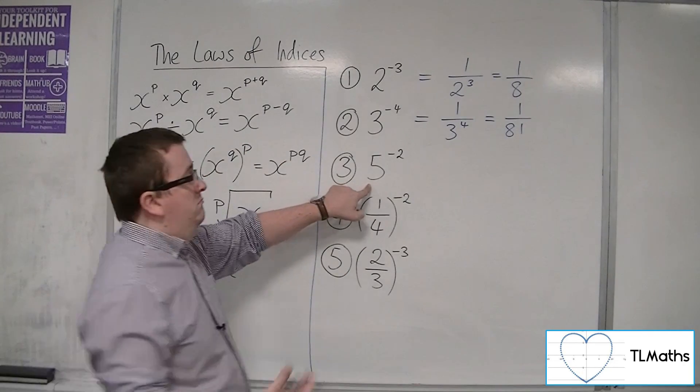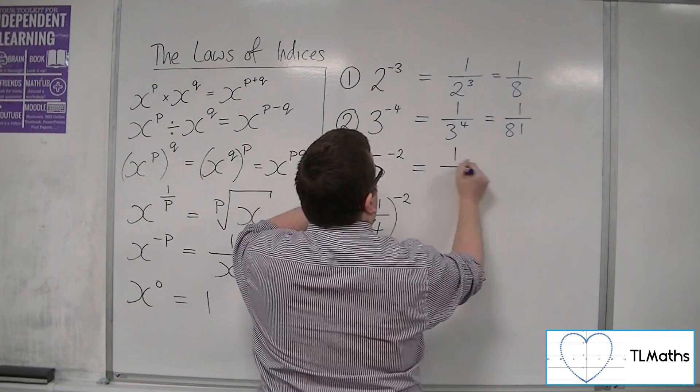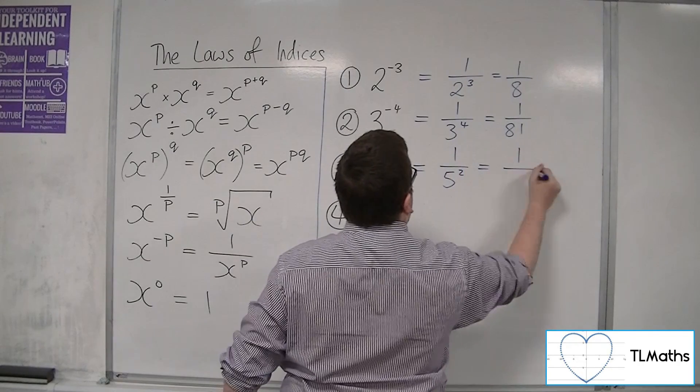5 to the minus 2 will be 1 over 5 to the 2. So that's 1 over 25.